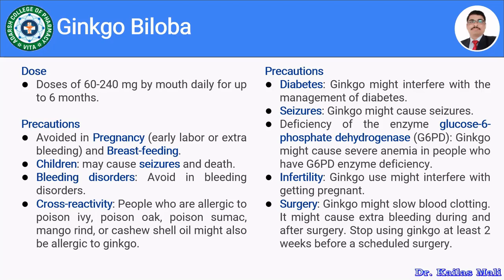In the case of G6PD (glucose-6-phosphate dehydrogenase) enzyme deficiency, ginkgo might cause severe anemia, so one should not take ginkgo products if suffering from G6PD deficiency. Regarding infertility, ginkgo products might interfere with getting pregnant and should be avoided. Before surgery, ginkgo might slow blood clotting and lead to bleeding, so one should not take ginkgo products within two weeks of a scheduled surgery.